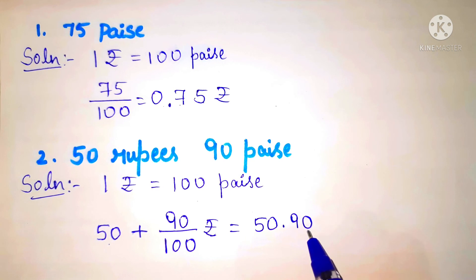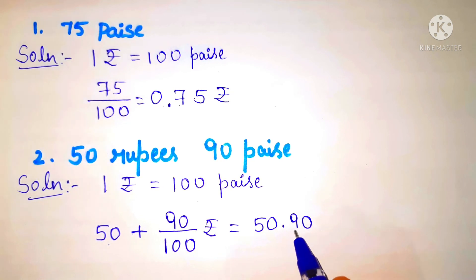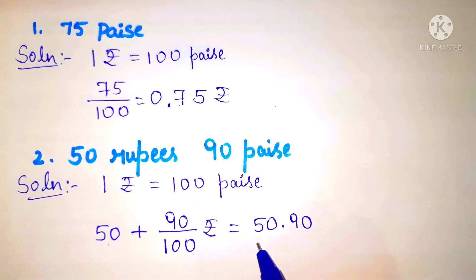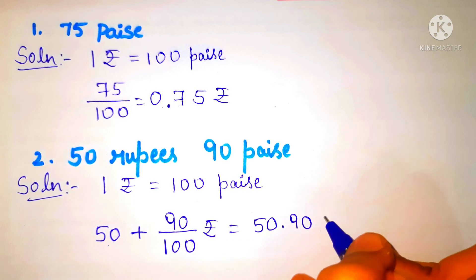We put the point after two digits: one, two. So the point is here. It will become 50.90 rupees.